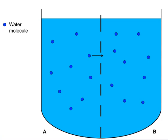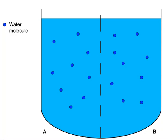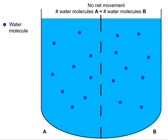As the molecules move, one may eventually cross the membrane in either direction and keep moving. Some will pass one way, others will pass the other way. At the end, about the same number of molecules are passing in one direction versus the other, so there is no net movement of water in either direction. The water levels on both sides of the membrane remain about the same.